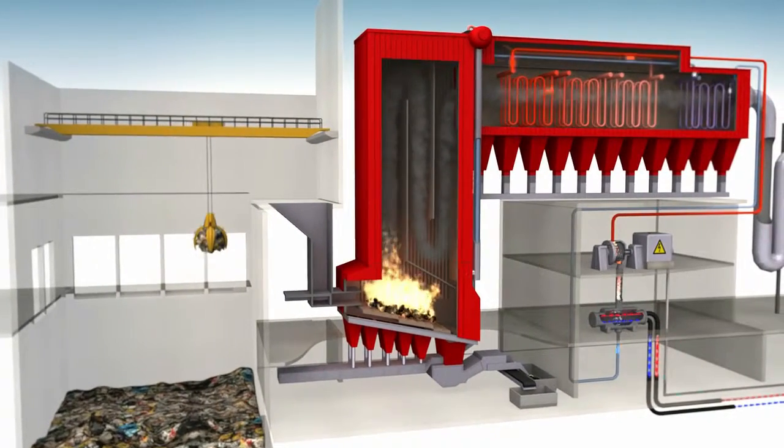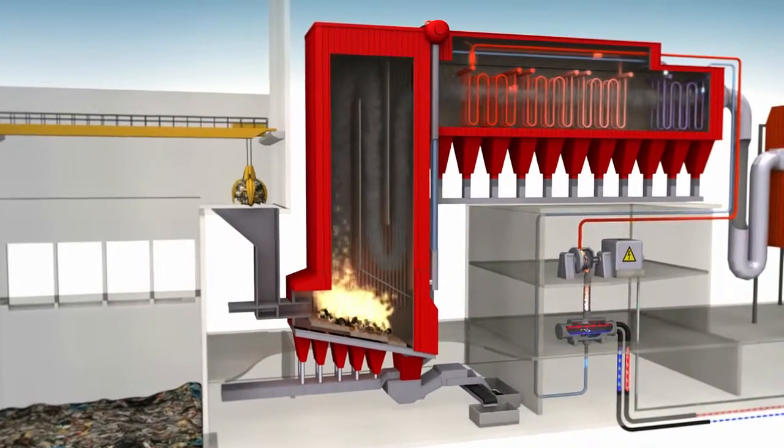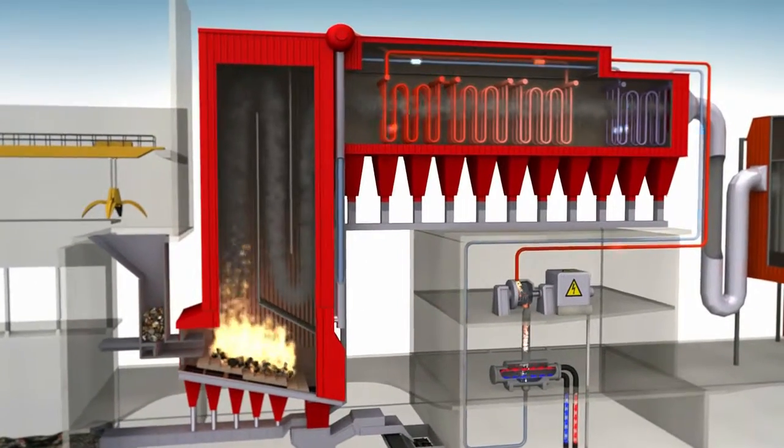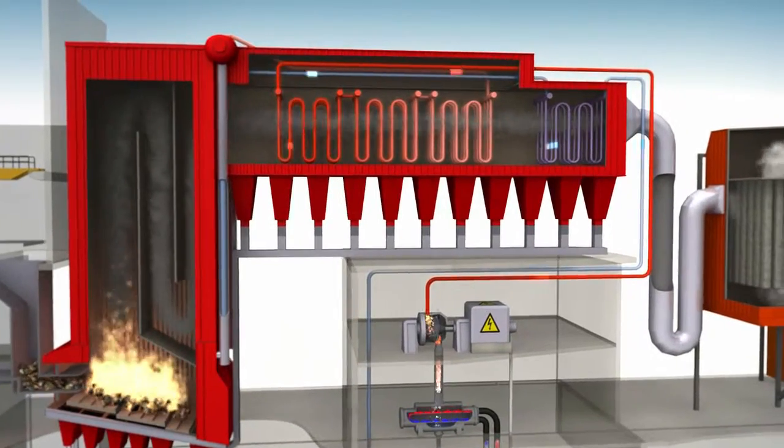Inside the boiler, there are almost 100 kilometers of water pipes. Water is heated to 270 degrees Celsius, which is the boiling point at a pressure of 50 bar. The steam created is then superheated to a temperature of 425 degrees Celsius.